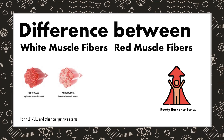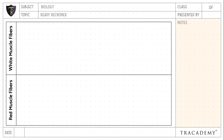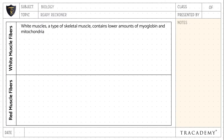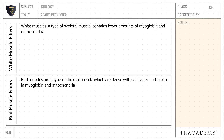Let us understand the difference between white muscle fibers and red muscle fibers. White muscle fibers are a type of skeletal muscle that contain a lower amount of myoglobin and mitochondria, whereas red muscles are a type of skeletal muscles which are dense with capillaries and are rich in myoglobin and mitochondria.